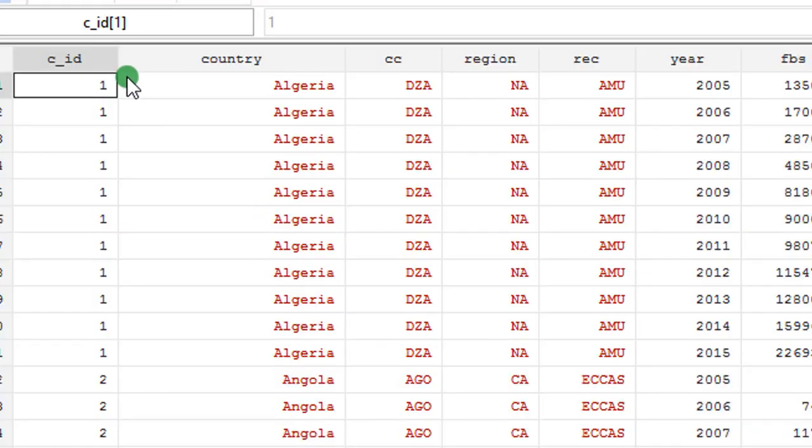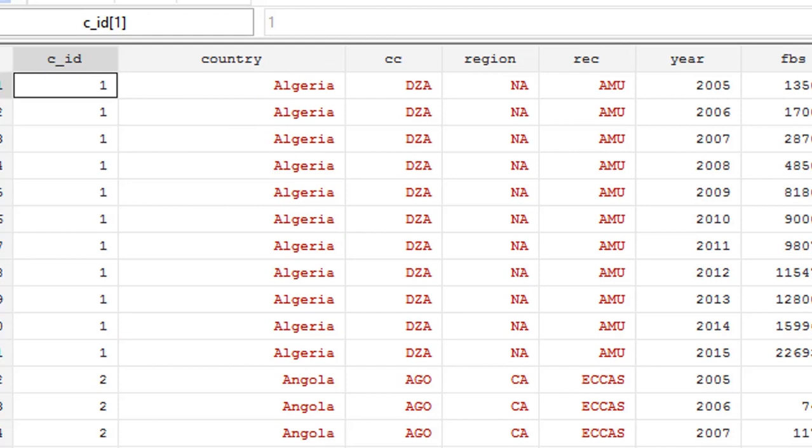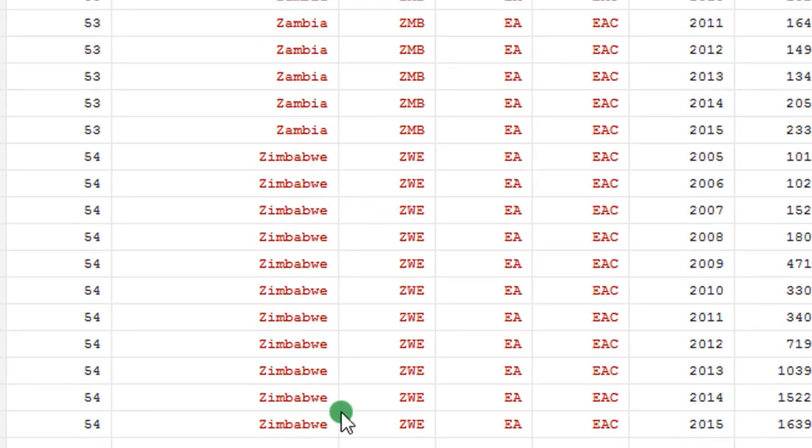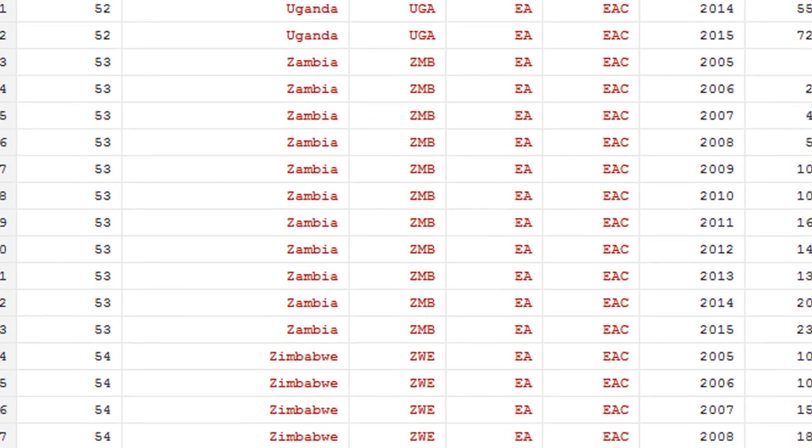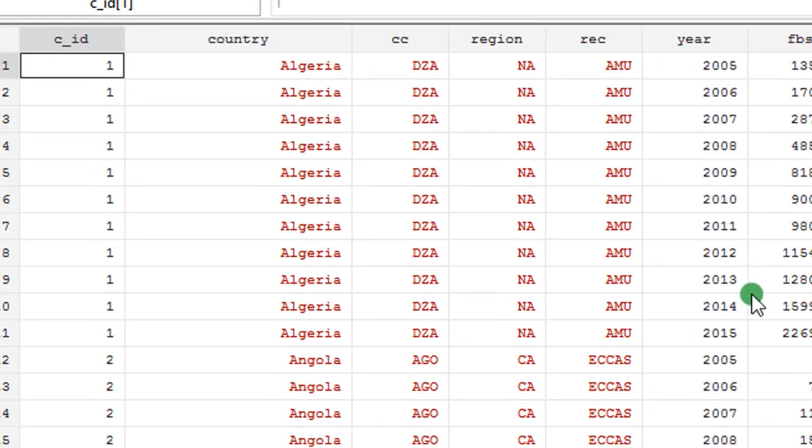Let me take you through my data editor. In my data editor, I have 54 African countries. Algeria is country one, and Zimbabwe is country 54. Each country has 11 years time span. I also structured my panel data to capture their sub-regions and their regional economic communities.